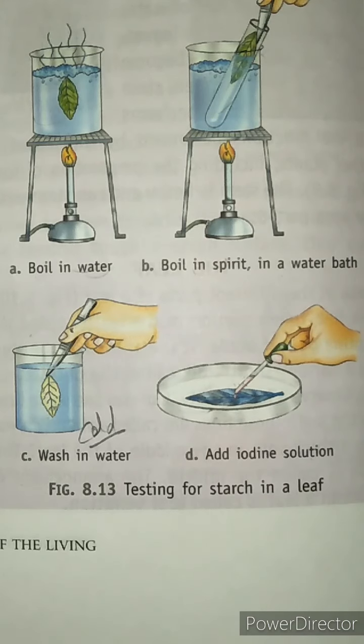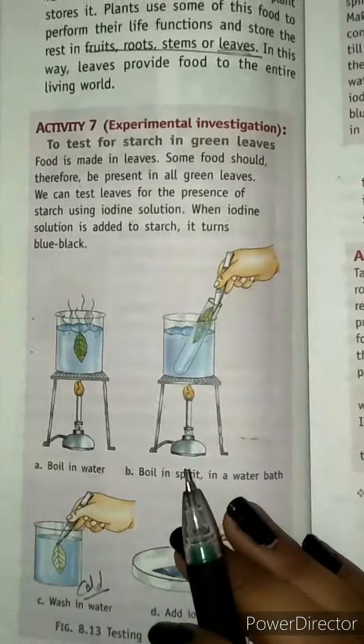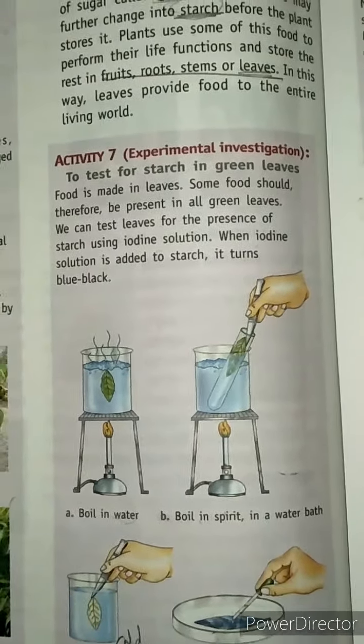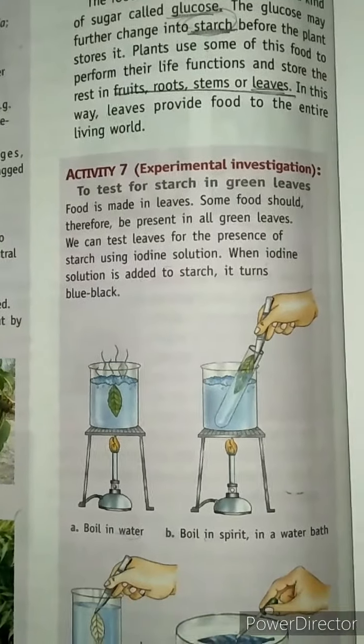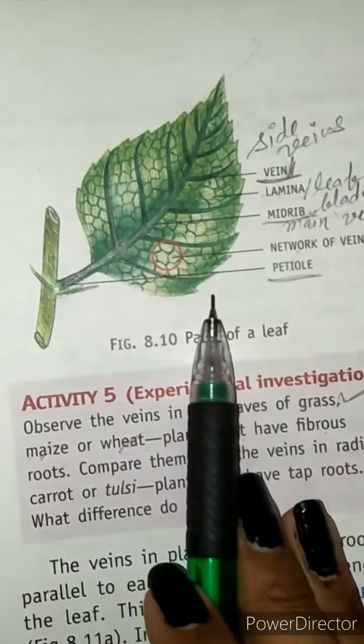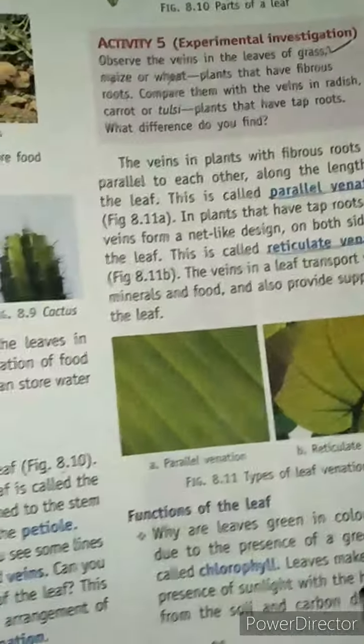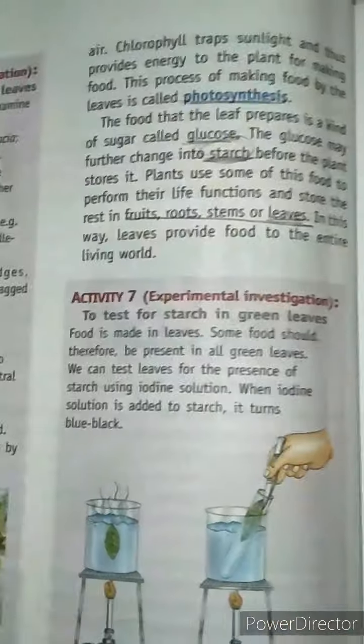This color change shows that starch is present in the leaf. Today's session is over. In the next session we will learn about more activities. Please practice the parts of a leaf, venation, and the functions of a leaf — including chlorophyll and photosynthesis.